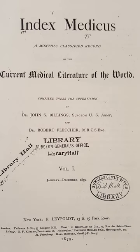Index Medicus was begun by John Shaw Billings, head of the library of the Surgeon General's Office, United States Army. This library later evolved into the United States National Library of Medicine. For such a major publication over many years, the history naturally involved many changes as people died and sources of funding changed.